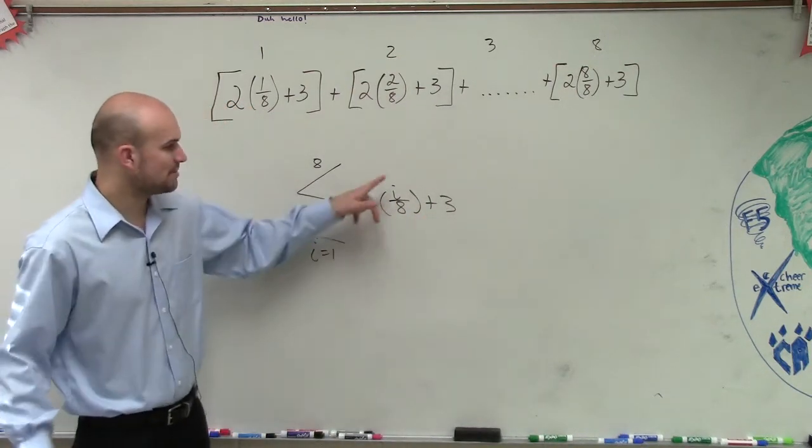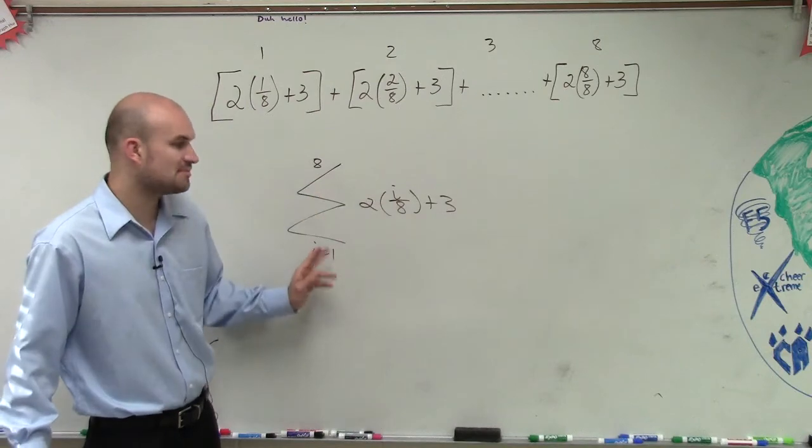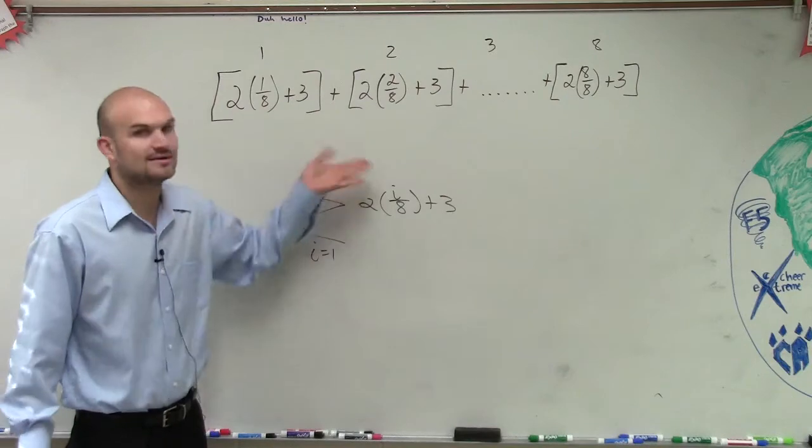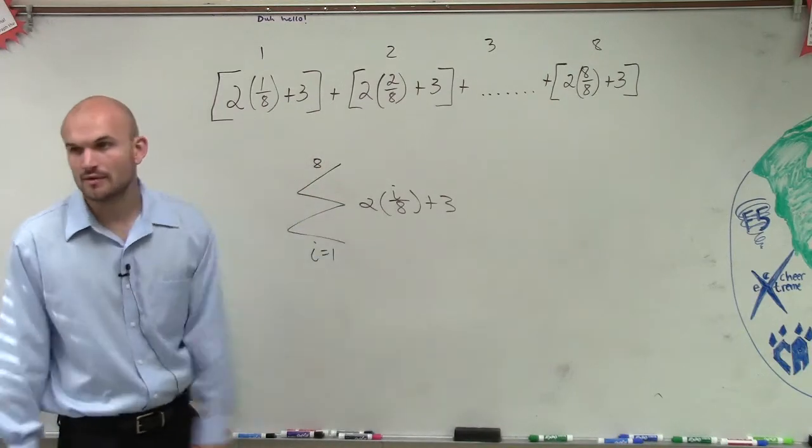Because for the first term you put a 1 for i. For the second term you put a 2 in for i. Third term you put a 3, fourth 4, 5, 6, 7, 8, and there you go.